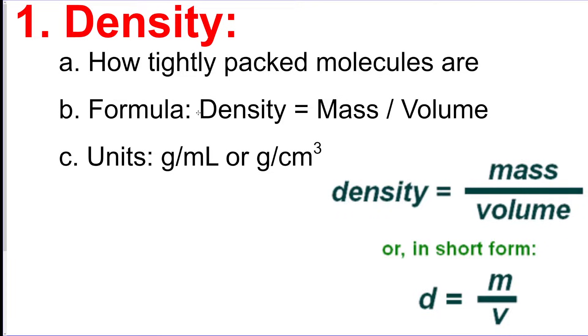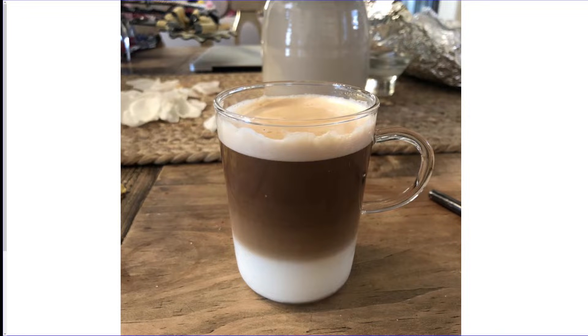You got a formula which we're going to talk about in a second. It's mass divided by volume. The two most common units are going to be grams per milliliter or grams per centimeter cubed.